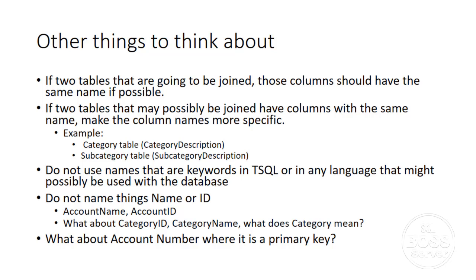Suppose users call something 'account number' and it would be nice if the database mirrored that. But if it's the primary key — an integer, auto-number — I am used to calling it account_ID. I'm going to vote in favor of calling it account_ID to maintain consistency within the database. The aliases that primarily appear will be labels within the application. If I have a database full of integer primary keys, I'd like them all to have the same naming scheme.